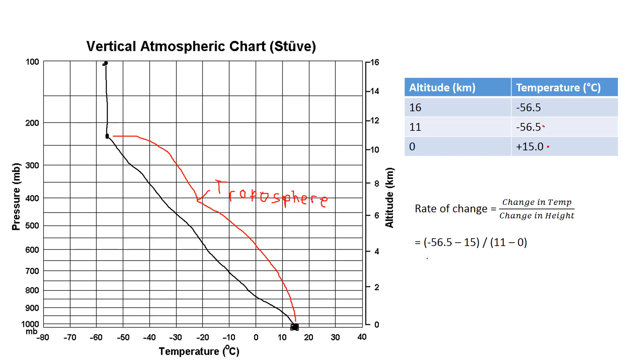So you're going to take this number and divide it by this number, and that's going to give you a rate of change. And basically what it's going to tell you is for every kilometer we go up, this is how much the temperature is declining. For every kilometer we go up, this is how much the temperature is declining.